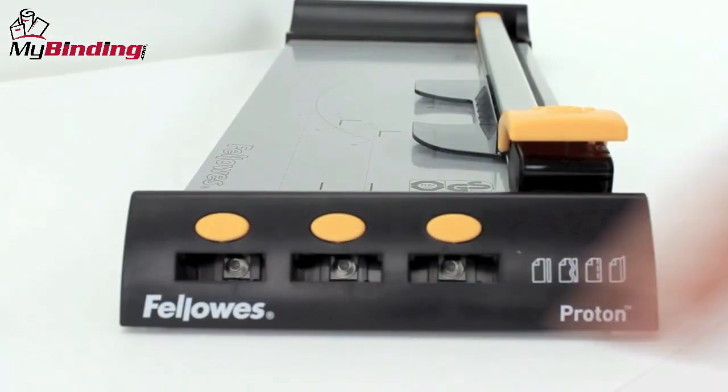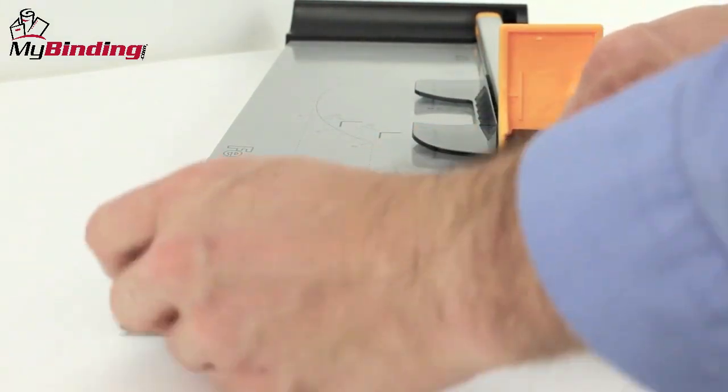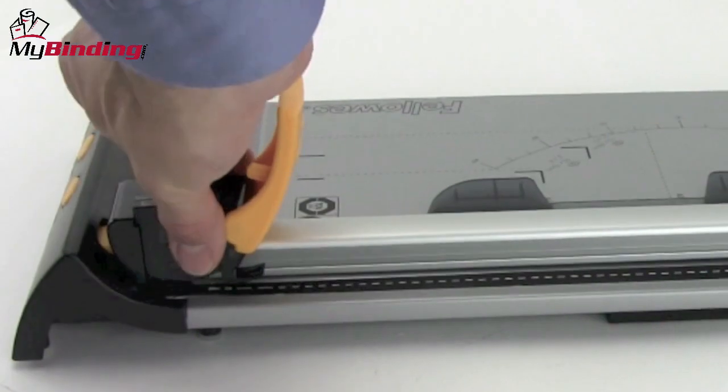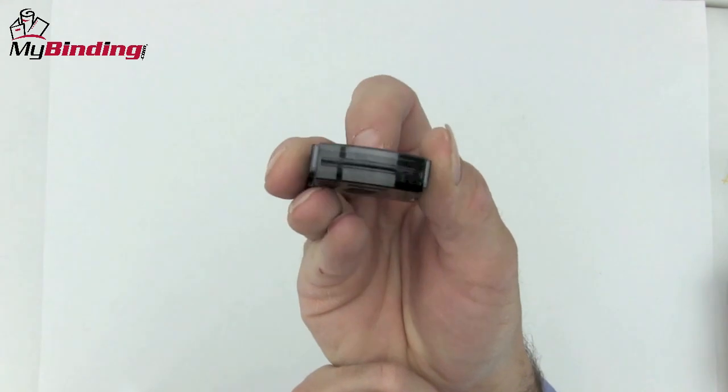Like many of the rotary trimmers in this line of Fellowes products, there are three sockets to hold additional blades. The blades are super easy to change. Simply pull them right out of the handle and there's no way to be hurt because the blade is completely encapsulated inside the cartridge.